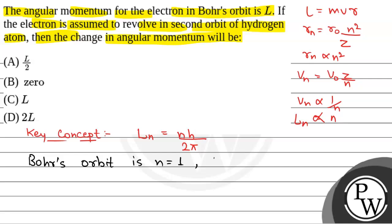So, angular momentum in Bohr's orbit L1 is equal to h by 2π and in second orbit of hydrogen atom L2 is equal to 2h by 2π.